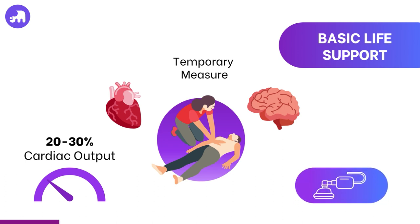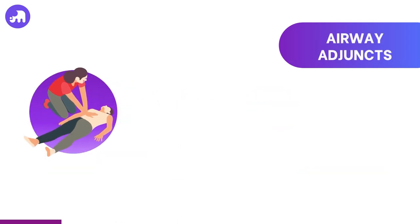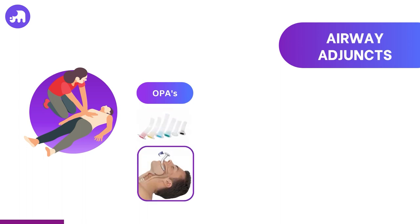This is why bag valve mask ventilation with 15 litres per minute flow of oxygen is recommended to be employed as soon as it is available, as this increases the inspired oxygen concentration up to around 90 to 95 percent. In certain BLS scenarios, adjunctive airways can be employed to optimise airway management and ventilation. These adjuncts assist in maintaining proper oxygenation and ventilation during resuscitation efforts. Some common adjunctive airways include oral pharyngeal airways or OPAs. These devices help prevent the tongue from obstructing the upper airway, facilitating effective ventilation. OPAs are particularly useful when the patient is unconscious or lacks muscle tone.